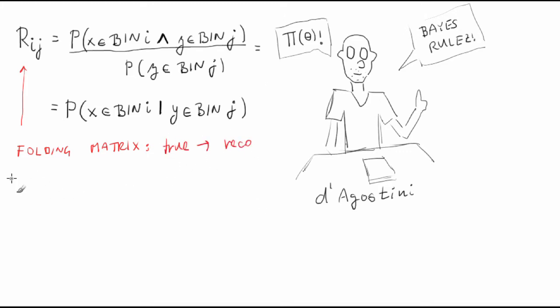In contrast to this, we can define an unfolding matrix, whose element R tilde sub ij represents the conditional probability for the true value y to fall into a bin j, given that the reconstructed value x falls into a bin i. R tilde sub ij is equal to the probability that y falls into the bin j, given that x falls into the bin i.